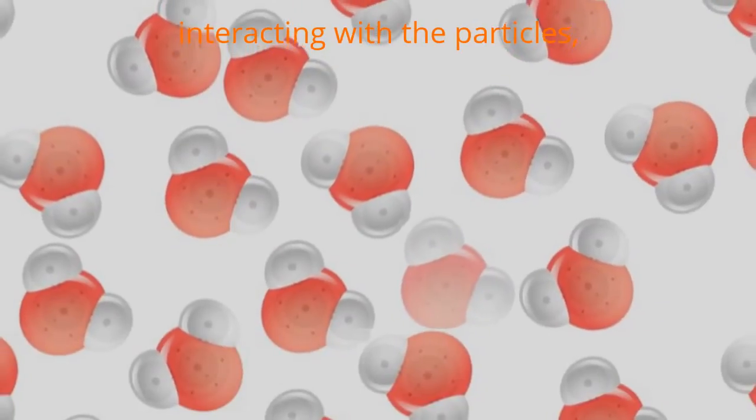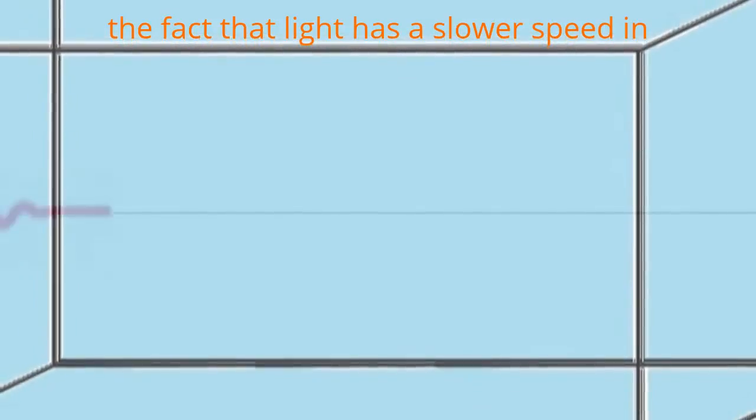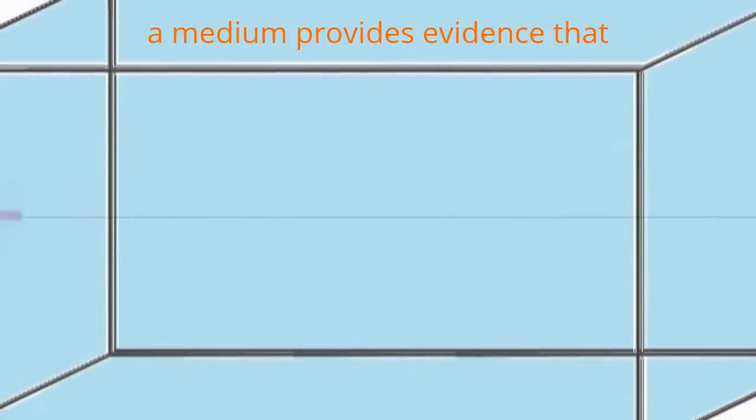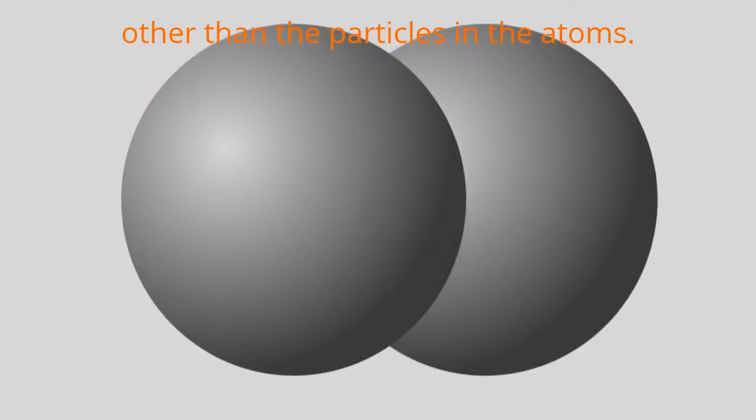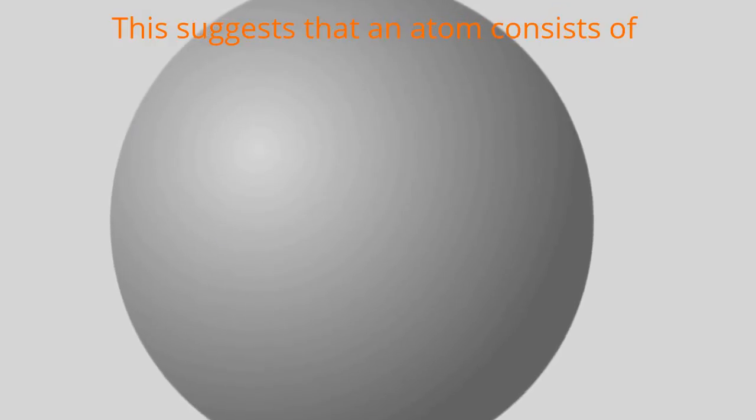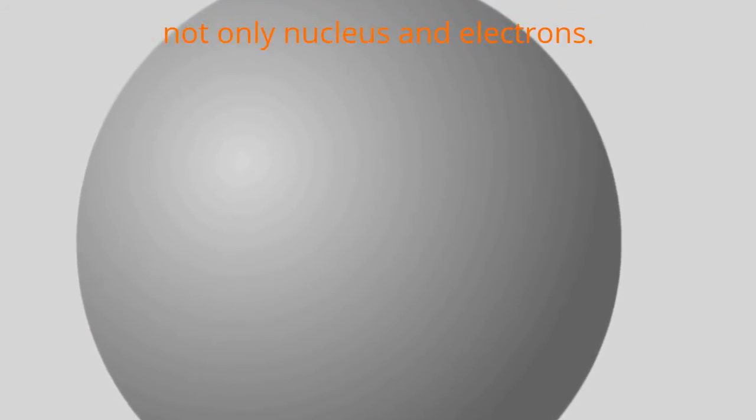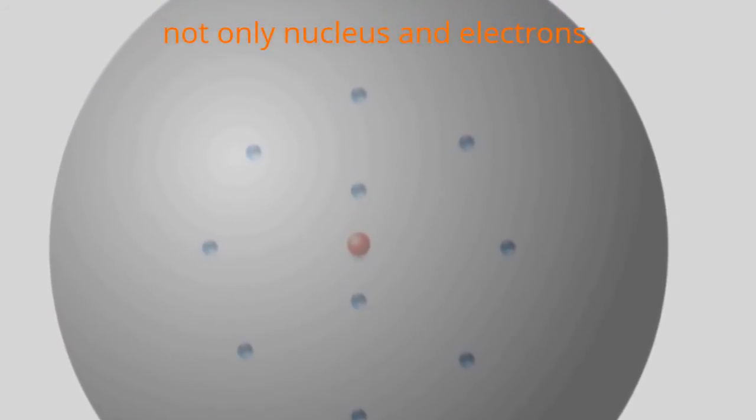Here even though the light is not interacting with the particles, the fact that light has a slower speed in a medium provides evidence that the light is interacting with something else other than the particles in the atoms. This suggests that an atom consists of not only nucleus and electrons.